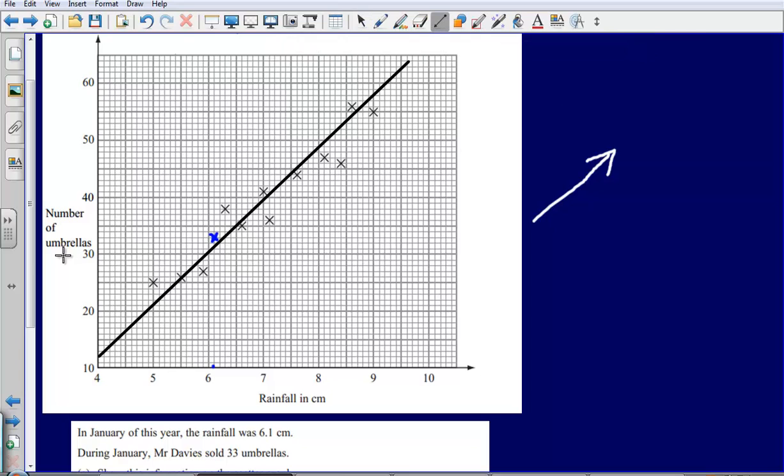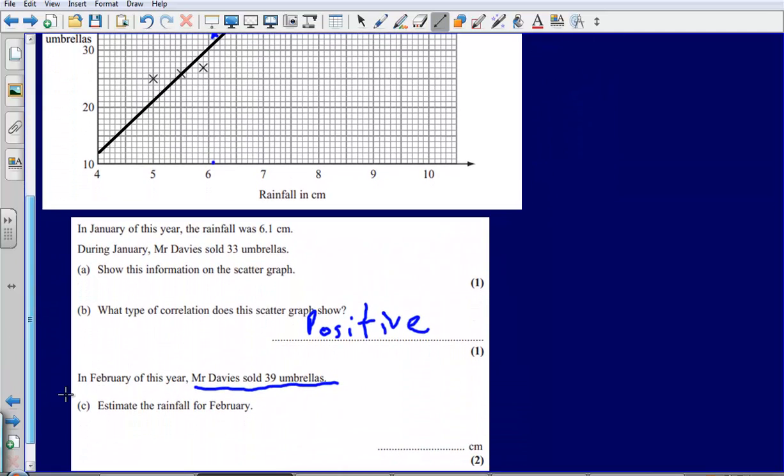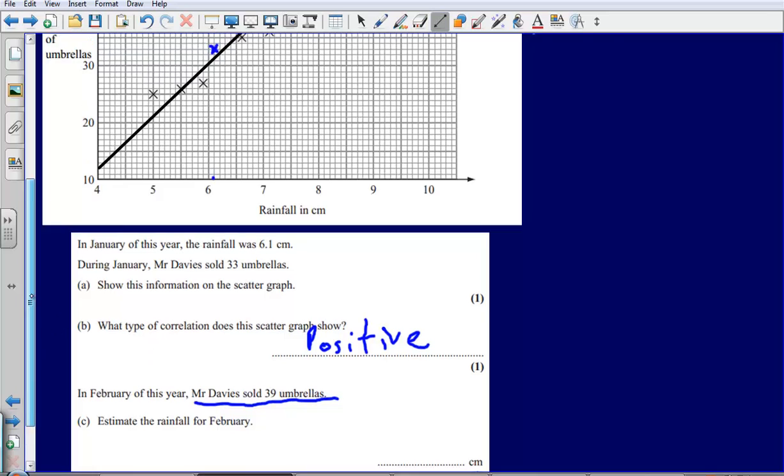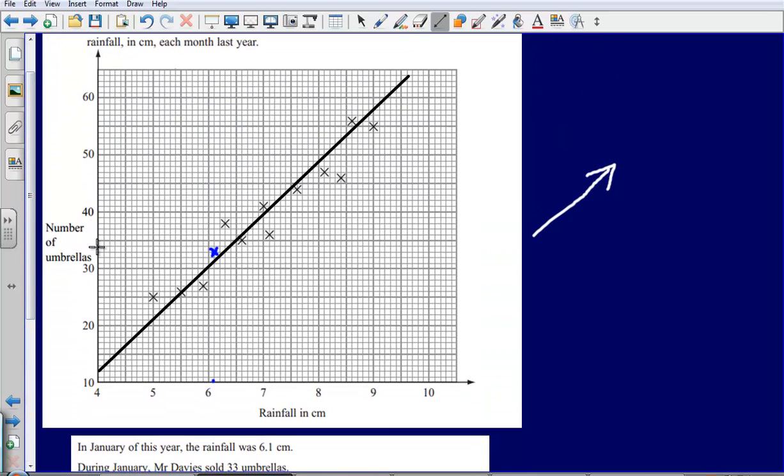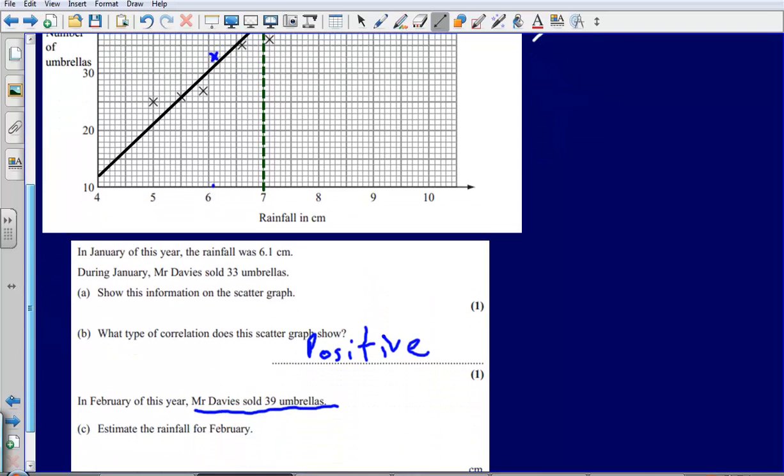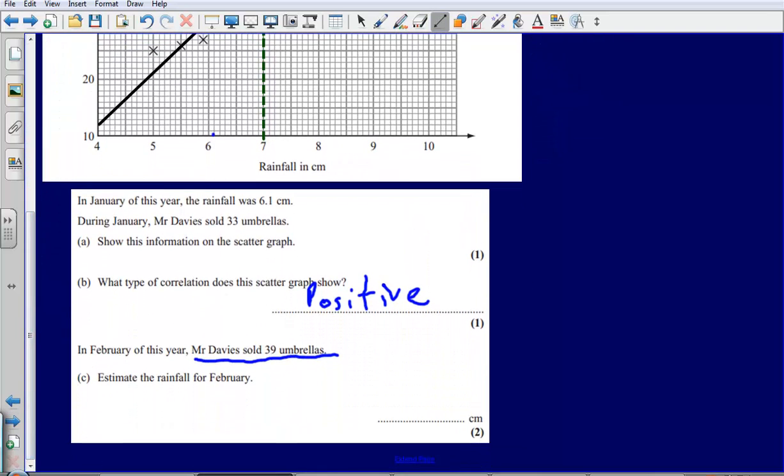Then the next thing that I need to do is use this line of best fit to make my estimation. So I'm told that Mr. Davis sold 39 umbrellas. I'm going to find where 39 umbrellas is on the number of umbrellas axis, that's going to be there. I'm going to draw a line across to my line of best fit and then go down from my line of best fit and that gives me an answer of 7 cm of rain. So the rainfall for February, given that Mr. Davis sold 39 umbrellas in February, the rainfall would be 7 cm.